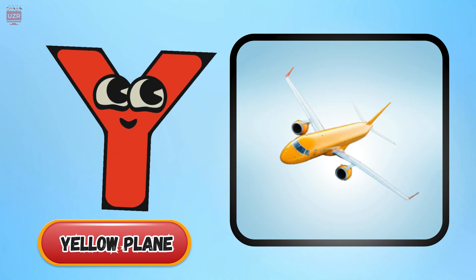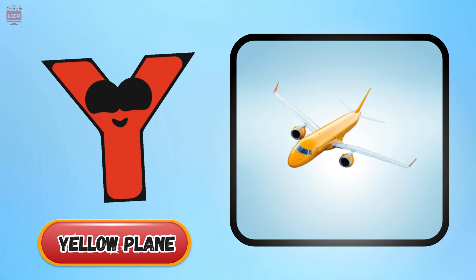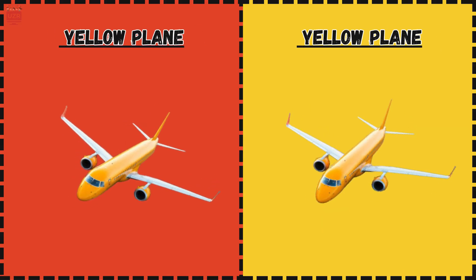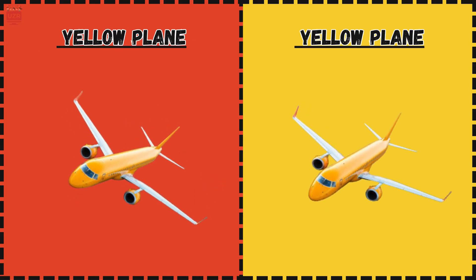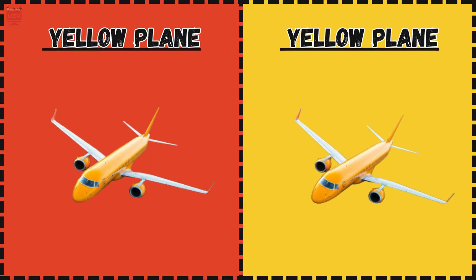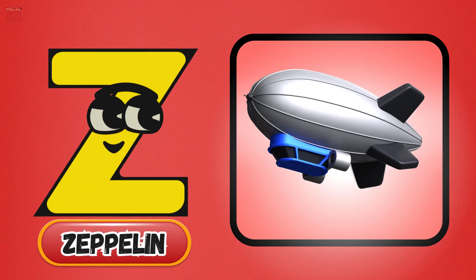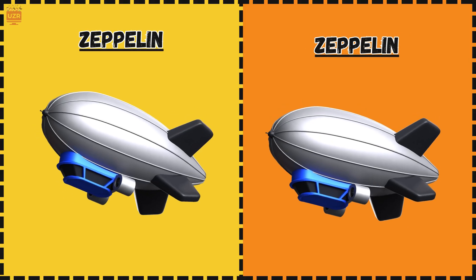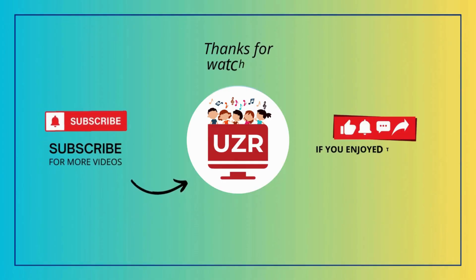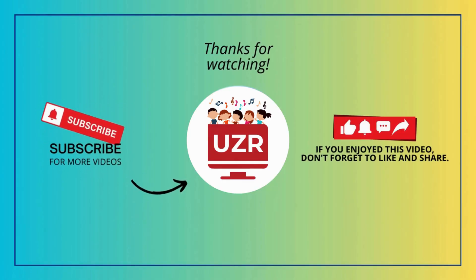Y is for yellow plane, flying bright for fun and play. Z is for zeppelin, drifting soft in skies all day.